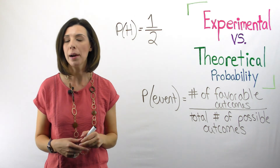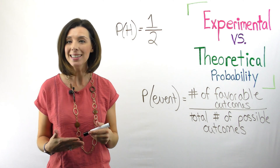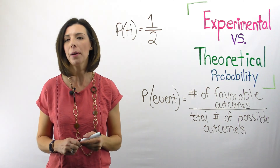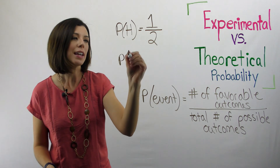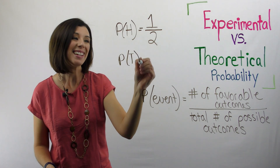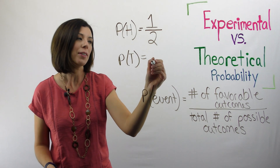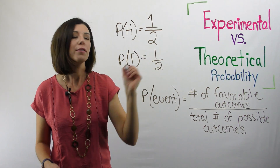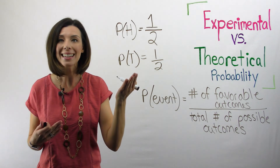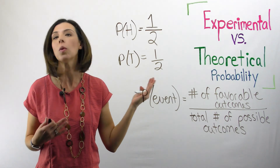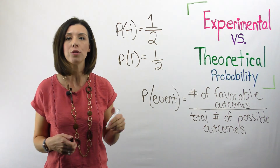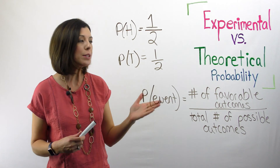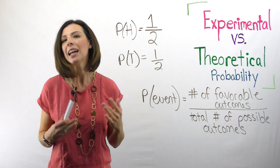Just like I can find the probability of heads — that's one half — I can also find the probability of tails, which in this case would be the exact same thing. I still have two options, and the favorable outcomes for tails would be one out of two possibilities. This would be theoretical probability.